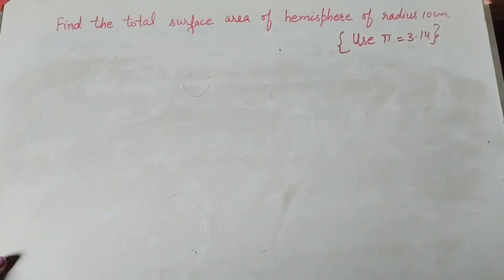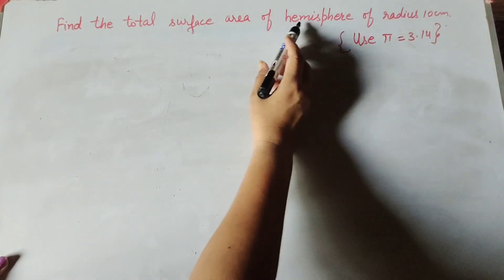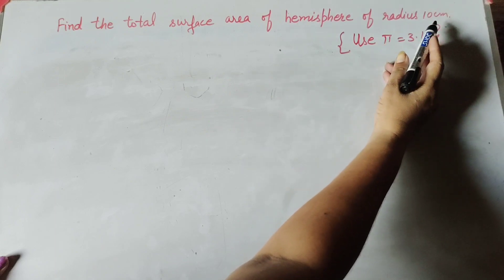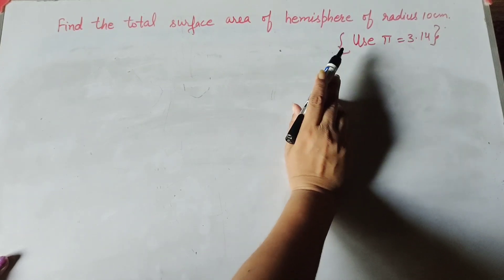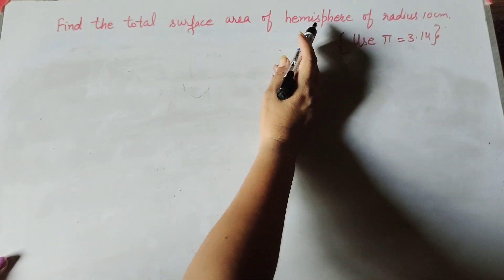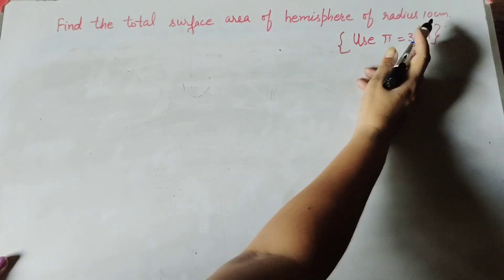Hello friends, welcome to my channel. In this video we discuss: find the total surface area of hemisphere of radius 10 centimeter. Use π = 3.14.